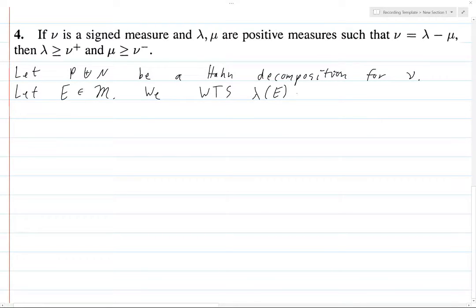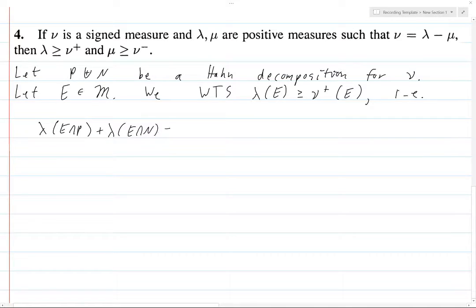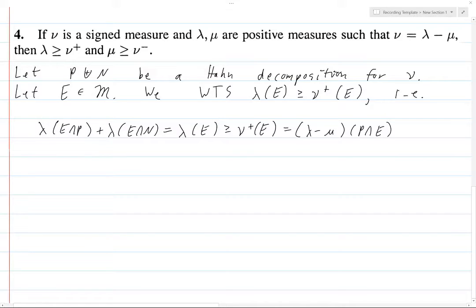...that λ(E) is greater than or equal to ν⁺(E). Let's write this out a bit more. So we've got λ(E∩P) + λ(E∩N), which is just another way of writing λ(E). We want to prove this is greater than or equal to ν⁺(E), which is λ(E∩P) minus μ(E∩P). So if we look at this, we see that the λ(E∩P) terms cancel.